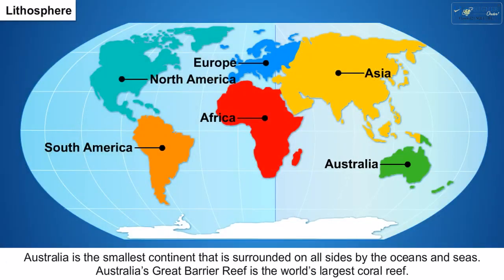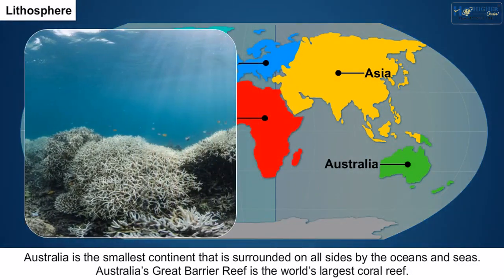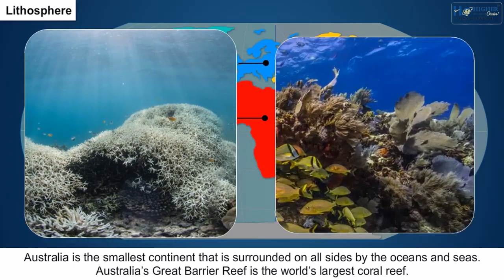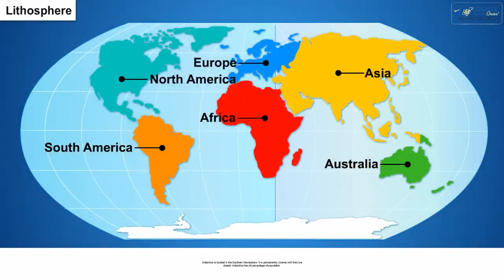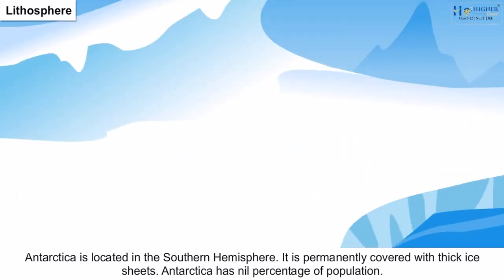6. Australia is the smallest continent, surrounded on all sides by oceans and seas. Australia's Great Barrier Reef is the world's largest coral reef. 7. Antarctica is located in the southern hemisphere. It is permanently covered with thick ice sheets and has nil percentage of population.